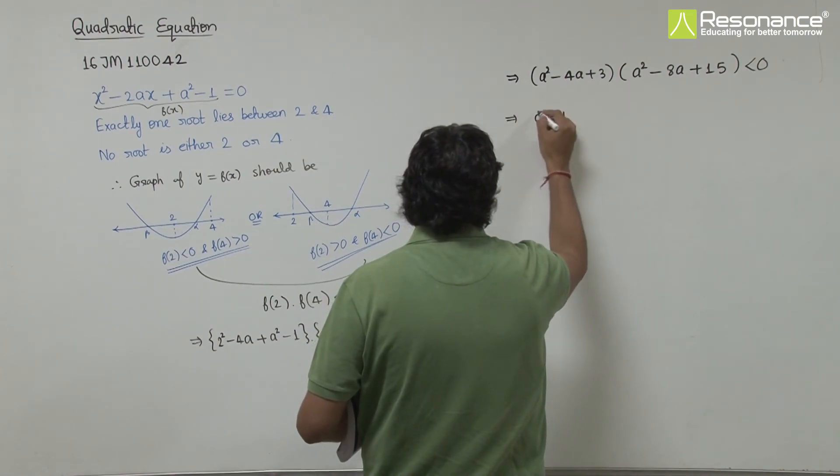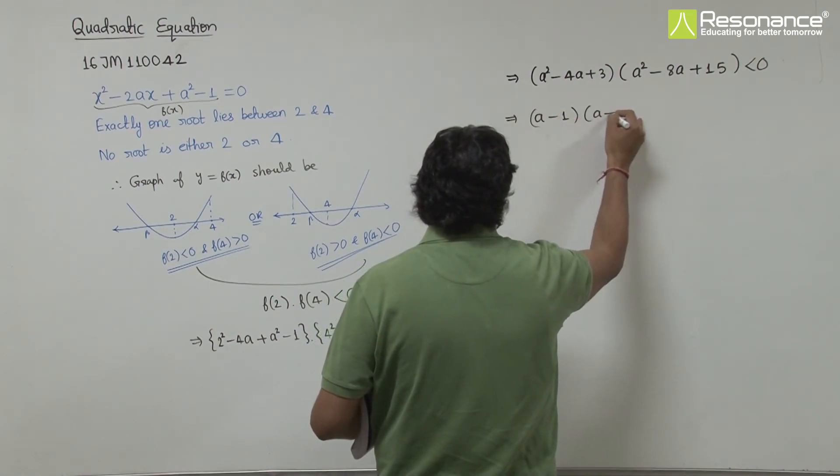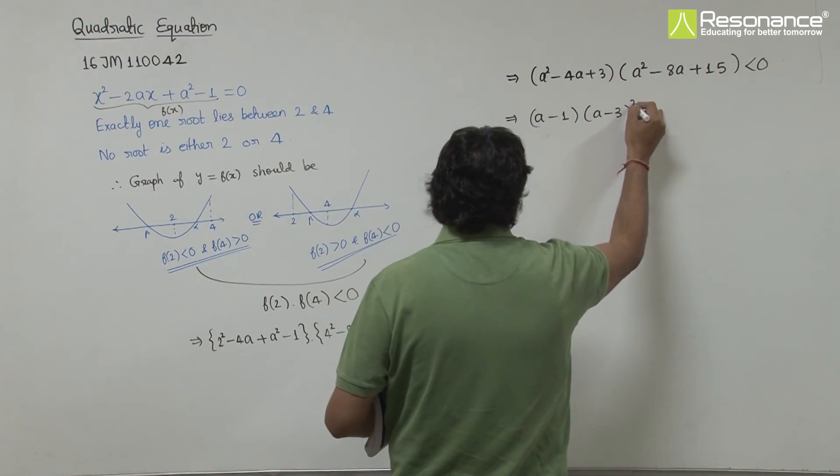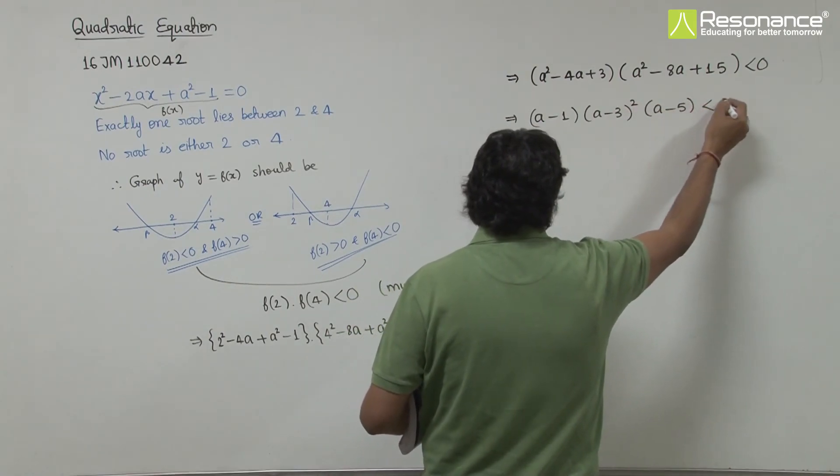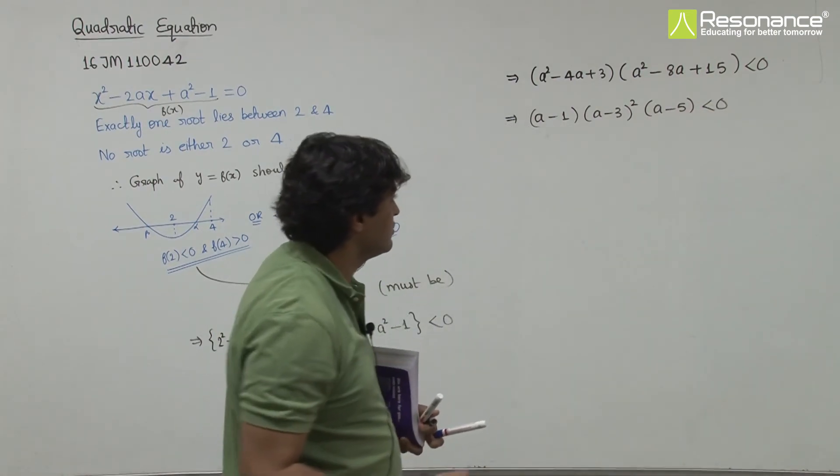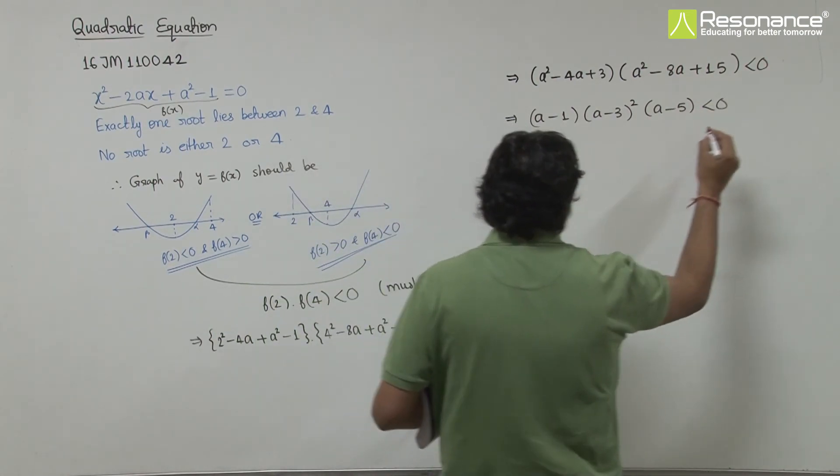The factors are (a - 1)(a - 3) and (a - 3)(a - 5). So we have (a - 1)(a - 3)²(a - 5) < 0. When we plot this on the number line...